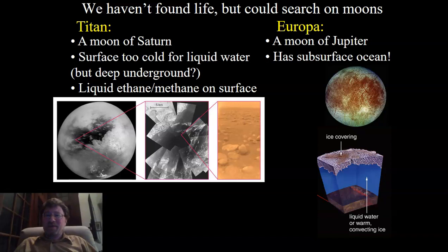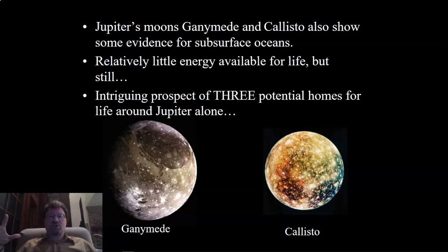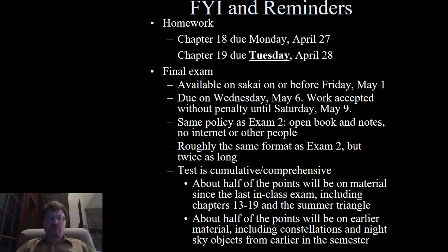Other moons where life could exist in our solar system include Ganymede and Callisto around Jupiter. Ganymede is the largest moon in the solar system; Callisto is an ice ball. The orbital resonance dance involving Ganymede could heat its interior, potentially supporting life. The answer to today's reading quiz is water on Mars. I hope you're all doing well and staying safe. Take care.